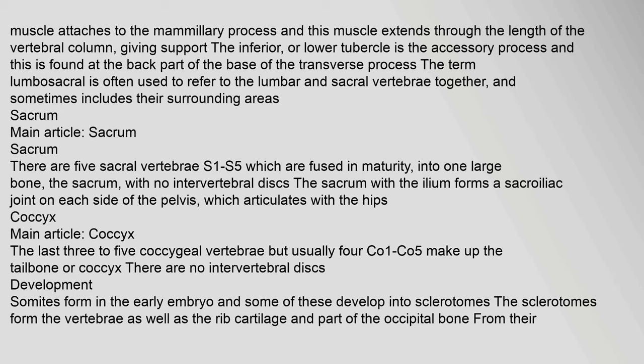There are five sacral vertebrae S1–S5 which are fused in maturity into one large bone, the sacrum, with no intervertebral discs. The sacrum with the ilium forms a sacroiliac joint on each side of the pelvis, which articulates with the hips. The last three to five coccygeal vertebrae — usually four, co-1 to co-5 — make up the tailbone or coccyx, also with no intervertebral discs. Somites form in the early embryo and some of these develop into sclerotomes. The sclerotomes form the vertebrae as well as the rib cartilage and part of the occipital bone.